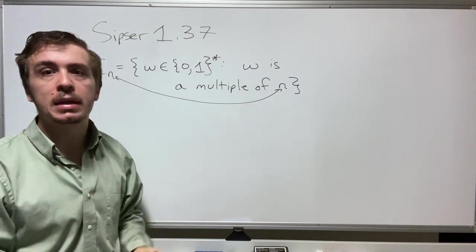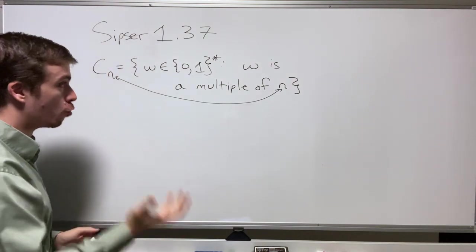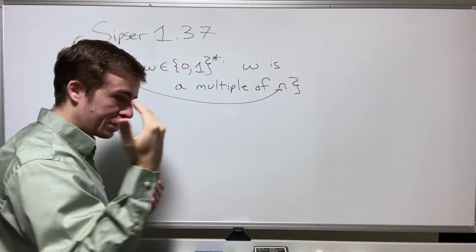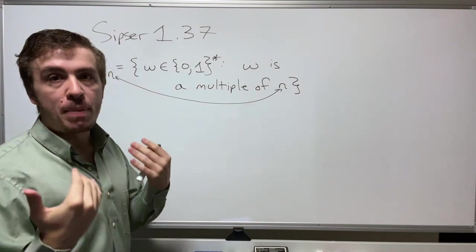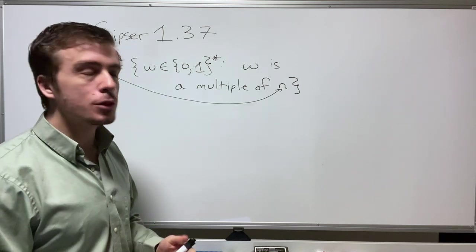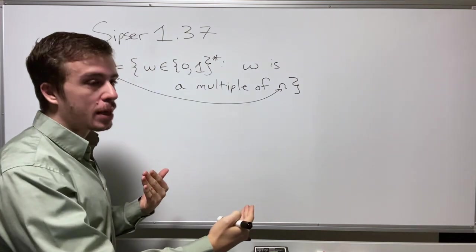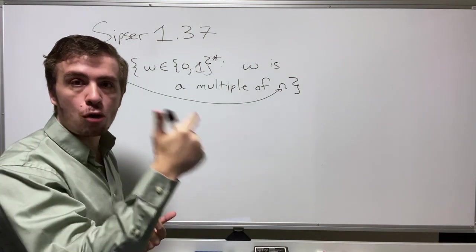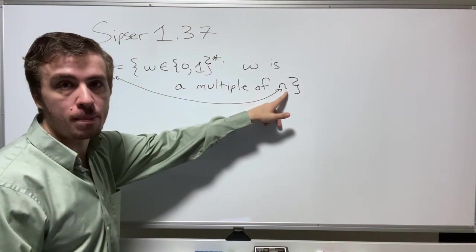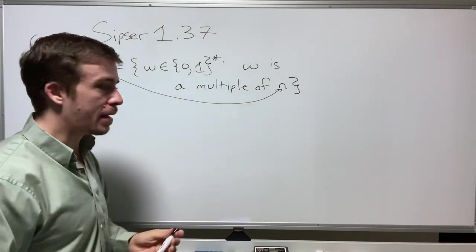I'm going to show the right way to approach this, which is to think about not just whether it's a multiple of n or not, but about the remainder when you divide by n. When you divide by n, the number is either going to have a remainder of 0, 1, 2, 3, and so on, up to n minus 1.